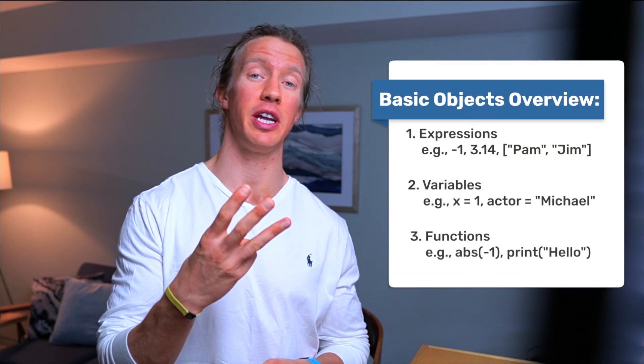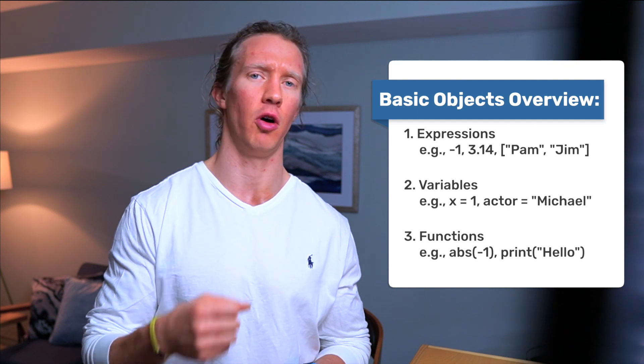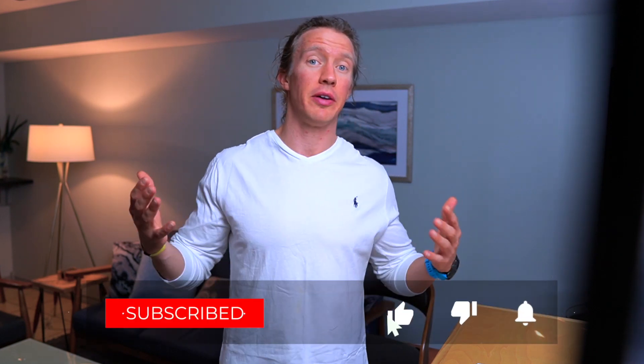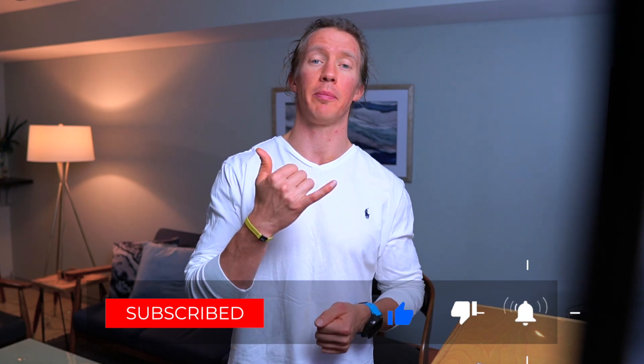There you have it — we covered the three basic types of objects: expressions, variables, and functions. In the next episode we're going to go into loops and if-statements, building on what we learned today. If you're new here, I'm Luke from Data Visualization by Luke — I try to make data analysis as easy as possible. If you found this video useful, smash that like button, consider subscribing, and we'll see you in the next one.